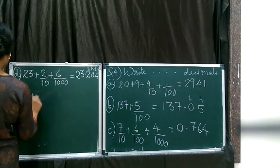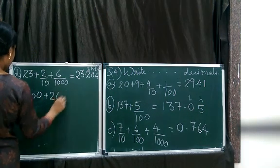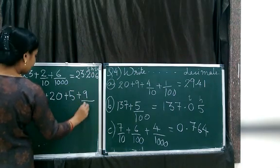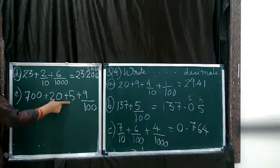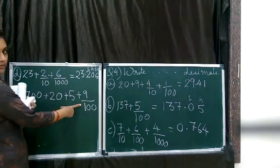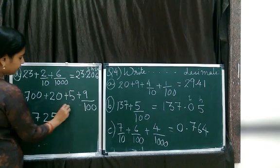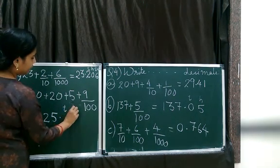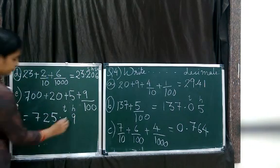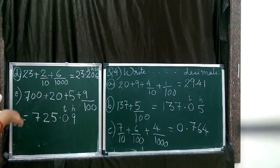700 plus 20 plus 5 plus 9 by 100. Now 700 plus 20 plus 5 means 725. Then 9 by 100 means 9 under hundredths place. After the decimal we have tenths place and then we have hundredths place. So 9 will come here and what will come here? Nothing, nothing means 0. This completes question number 4.